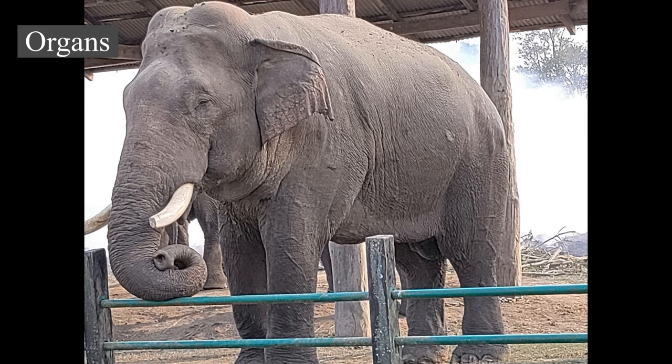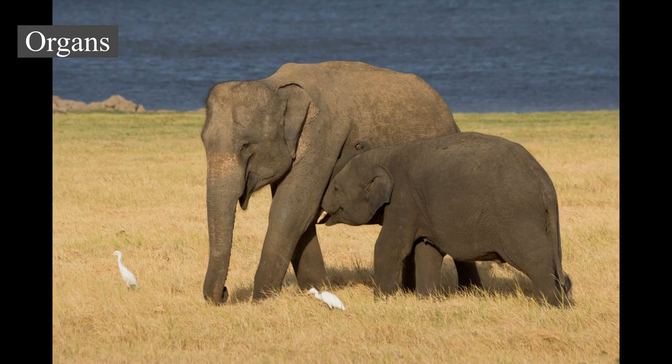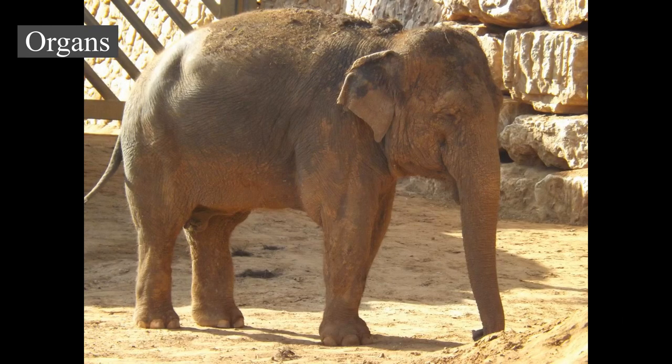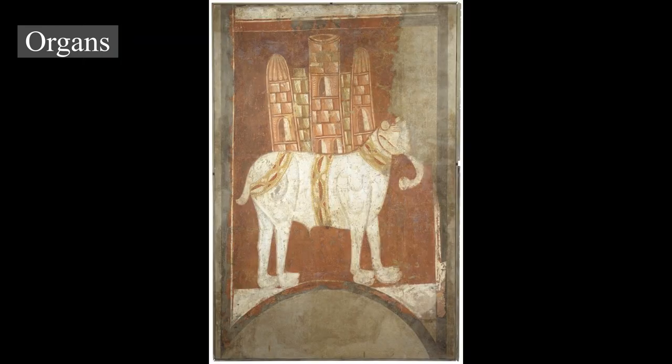When standing, the elephant's heart beats approximately 30 times per minute. Unlike many other animals, the heart rate speeds up by 8 to 10 beats per minute when the elephant is lying down. The blood vessels in most of the body are wide and thick and can withstand high blood pressures. The lungs are attached to the diaphragm, and breathing relies mainly on the diaphragm rather than the expansion of the ribcage. Connective tissue exists in place of the pleural cavity. This may allow the animal to deal with the pressure differences when its body is underwater and its trunk is breaking the surface for air, although this explanation has been questioned.